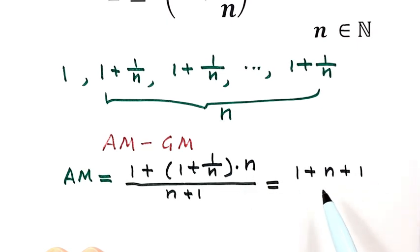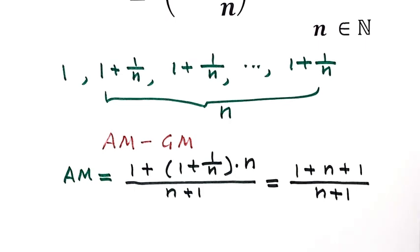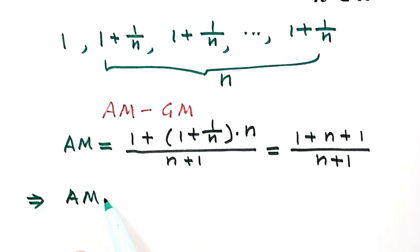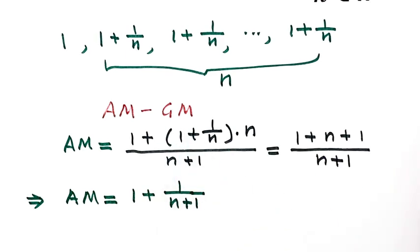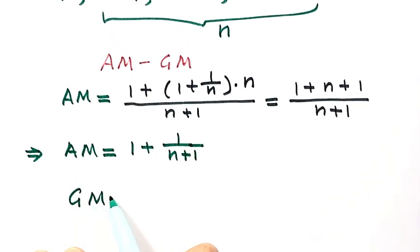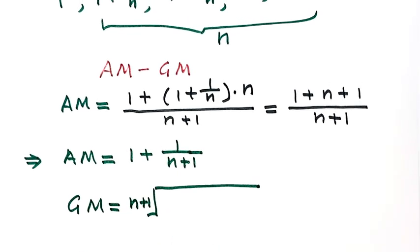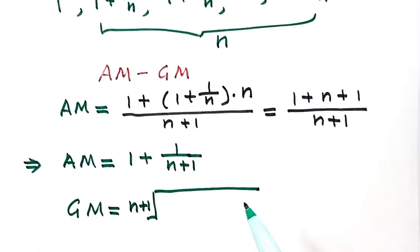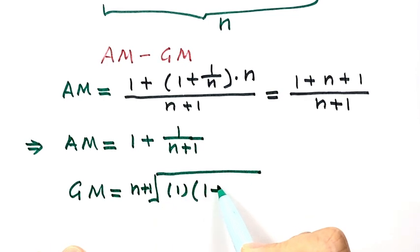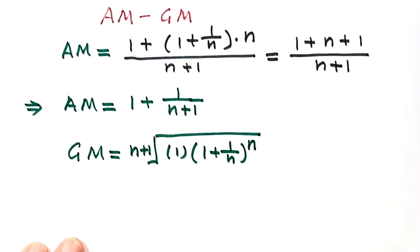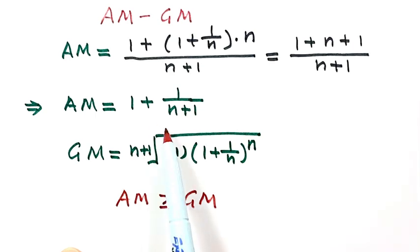Continuing to simplify: the numerator is n+1, divided by n+1, which equals 1 + 1/(n+1). So the arithmetic mean is 1 + 1/(n+1). Now for the geometric mean: since we have n+1 terms, the GM is the (n+1)-th root of the product of all n+1 terms — that is, 1 times (1 + 1/n)^n.